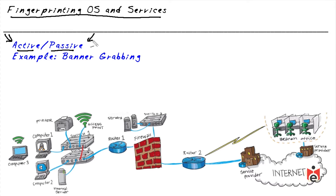With passive fingerprinting, we analyze traffic going back and forth between that system and another device — which can be obtained through eavesdropping or man-in-the-middle attacks. With banner grabbing, our intent is to see how the device responds, then identify what OS is running, and line up the vulnerabilities that system might have.